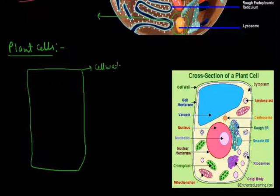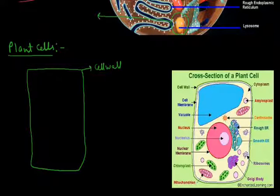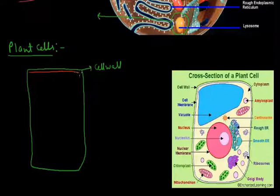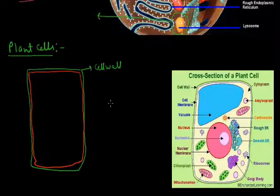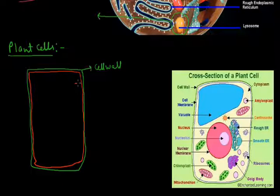The cell wall is absent in the animal cell and is the outermost layer in the plant cell. Inside the cell wall, the plant cell also has a cell membrane, which is made up of protein and lipid. Inside the cell membrane is the liquid we call cytoplasm or cytosol.